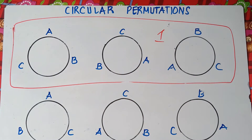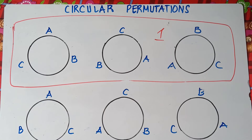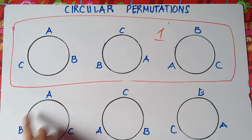We have another three circles — ABC, ABC, ABC. This time I rotate them counterclockwise. Class, do not be confused with clockwise and counterclockwise. If you want to know about clockwise, just look at the clock — that's clockwise. This time, with counterclockwise rotation, B is on the left side of A and C is on the right side of A.